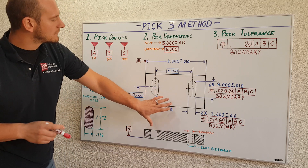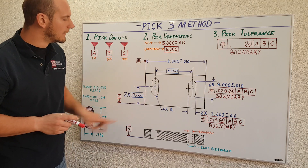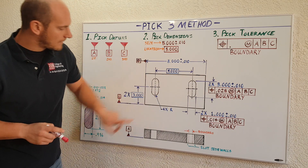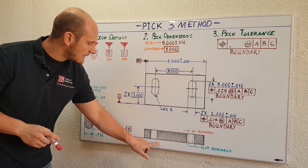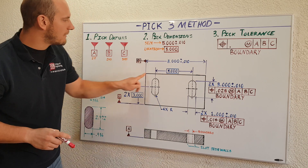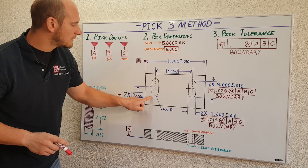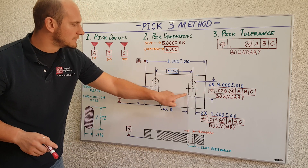What we have here is what you typically see on the face of the drawing. You have your top view, you have your front section view, you have the outline of your plate, and you have your internal slotted features.